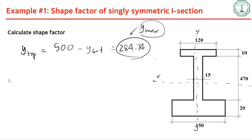To calculate the moment of inertia, we use the parallel axis theorem. The cross-section is split into different areas, and the local centroid of each small area is different from the centroid of the entire cross-section.